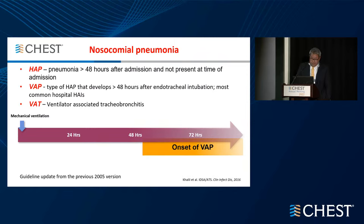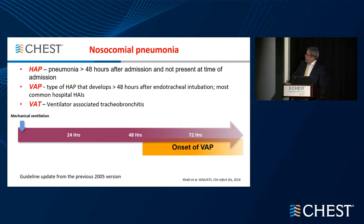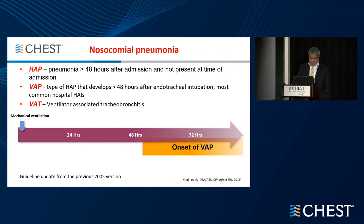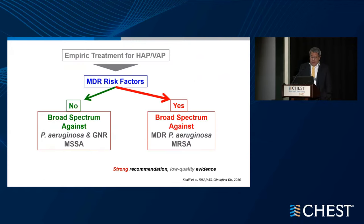By definition, HAP is pneumonia occurring after 48 hours after admission that was not present at the time of admission. Ventilator-associated pneumonia develops typically after 48 hours after endotracheal intubation. The guideline also mentions ventilator-associated tracheal bronchitis.